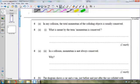So we go back to the start. It begins by saying that in any collision the total momentum of the colliding objects is usually conserved. So it's just stated the conservation of momentum. And then it's asking you what is meant by the term momentum is conserved.